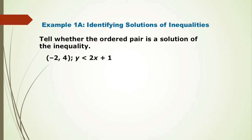Number one, tell whether the ordered pair is a solution to the inequality. The first thing that we should do is to simply substitute negative 2 and 4 for x and y. So let's do it.